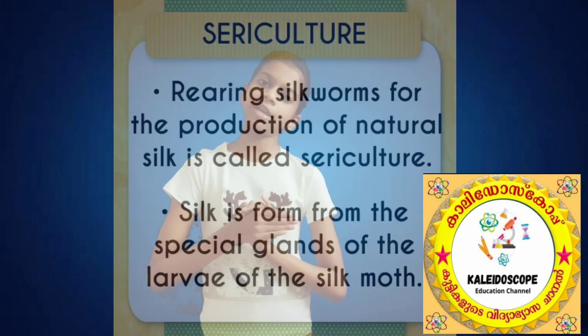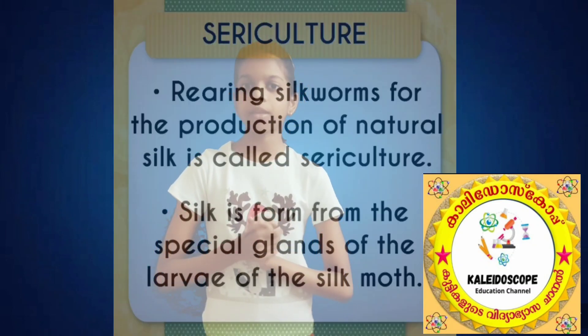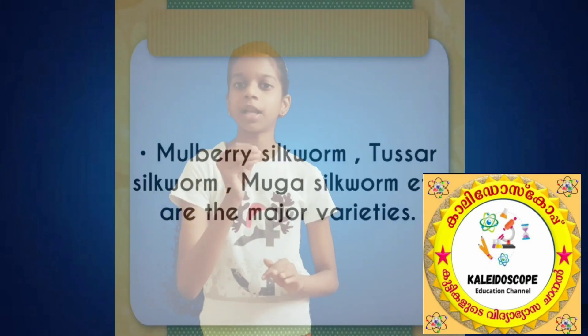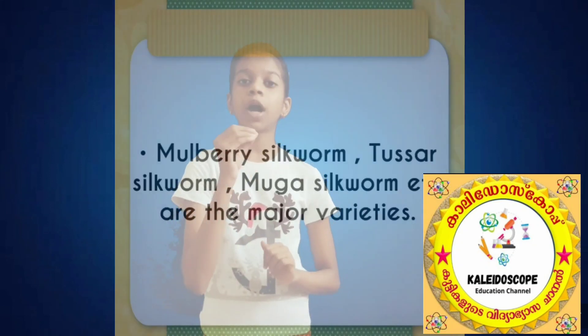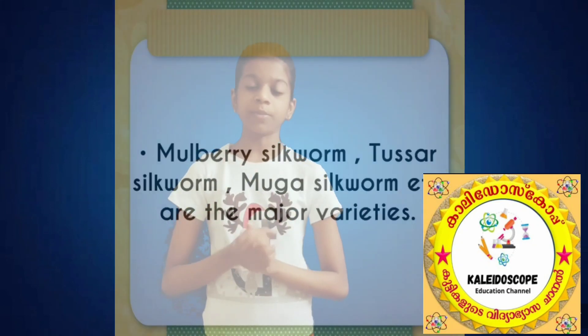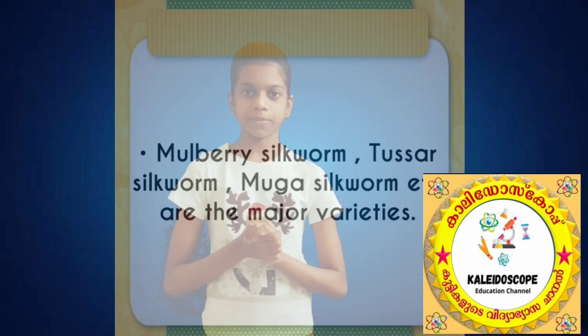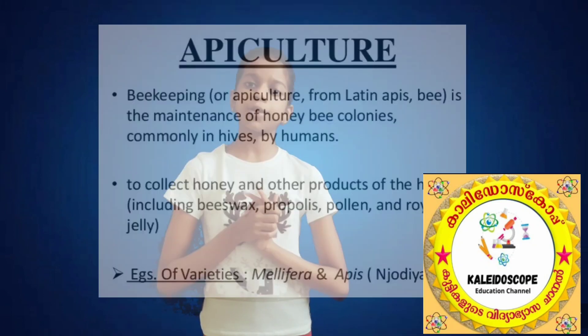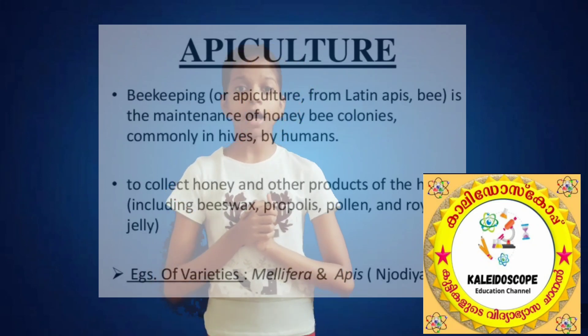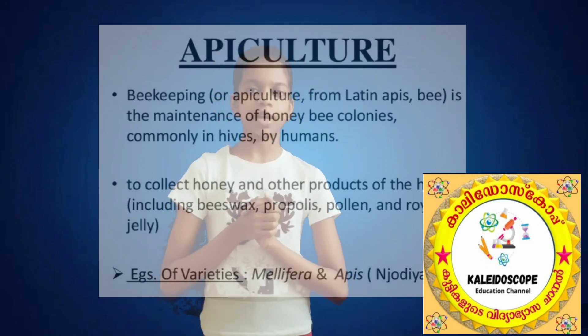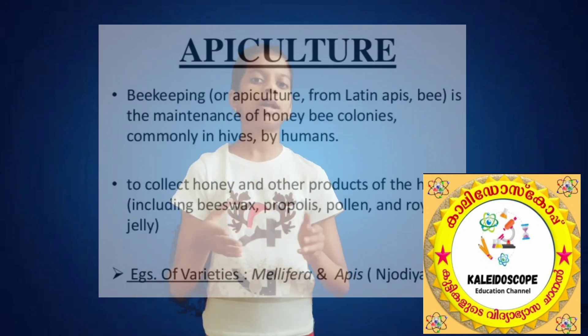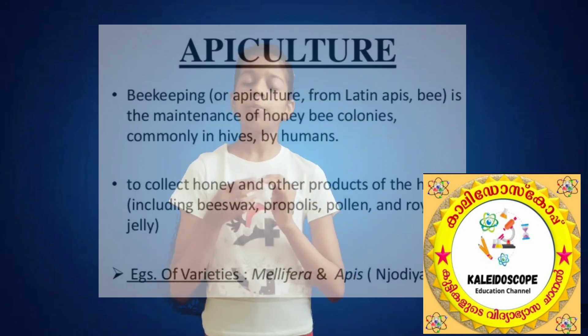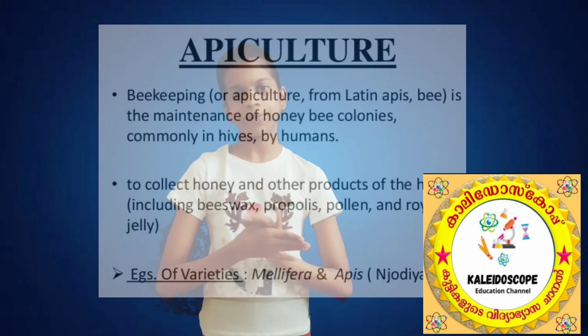The next sector is Sericulture. Products include silk thread. Varieties are Mulberry Silkworm, Muga Silkworm, and Tasar Silkworm. The next sector is Apiculture. Products include honey, honey wax, honey venom, and royal jelly. Varieties are Collin, Mellifera, and Nudian.